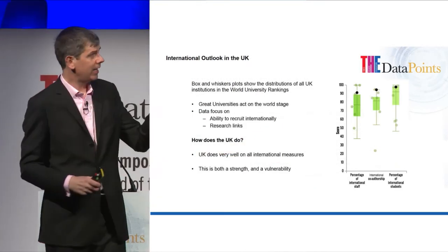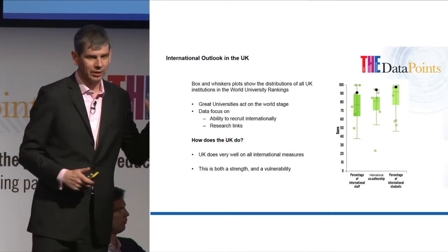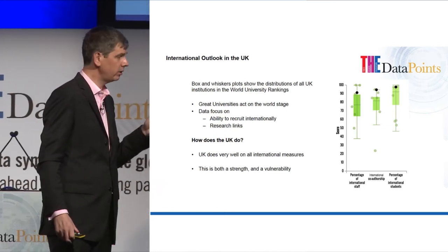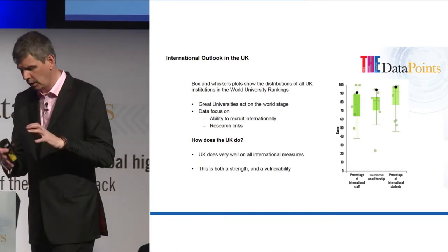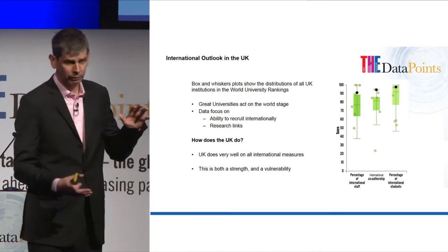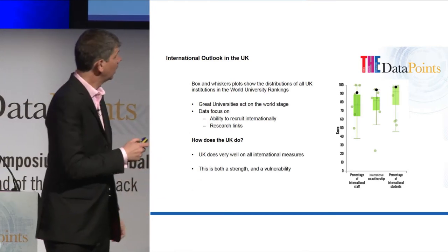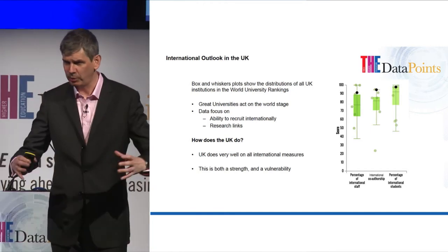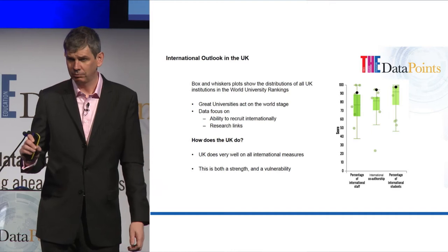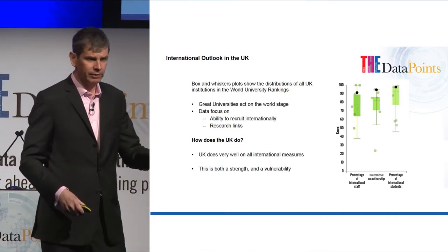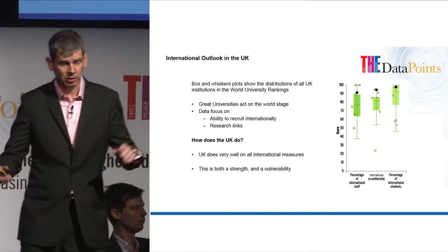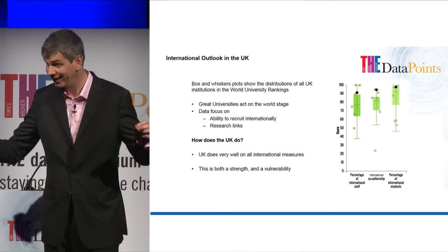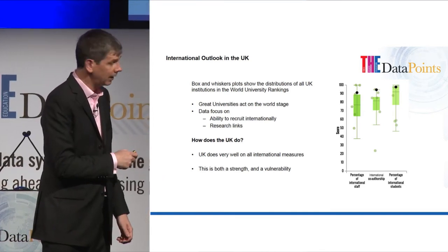Here we have what the UK looks like in terms of its international measures. The three international measures are the percentage of international staff, the percentage of international students, and the number of internationally co-authored papers. What I'm showing is a screenshot from within our data product — a box and whiskers plot. The line in the middle is the median value. The bottom and top of the box represent the 25th and 75th percentiles, so most of the data will be within those bounds. The top and bottom of the whiskers represent one and a half times the interquartile range.